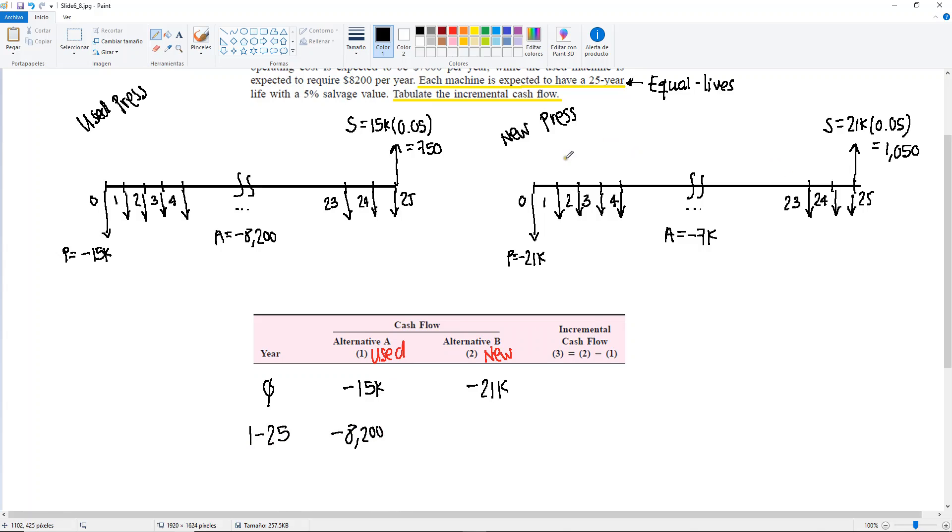Same thing for the new one. We have the same A going down from years 1 through 25, so you're going to list it here as minus 7,000. But we are missing the salvage value. So we can point out that at year 25, for the used press, we have a cash flow of positive 750. And for the new press, we have positive 1,050.